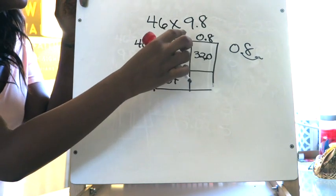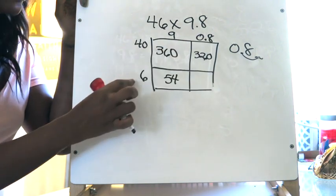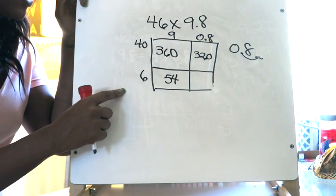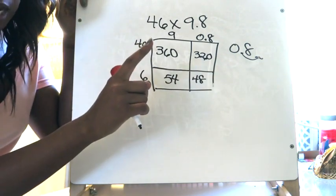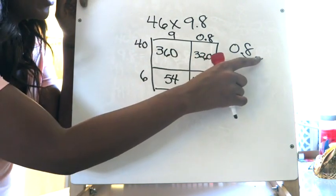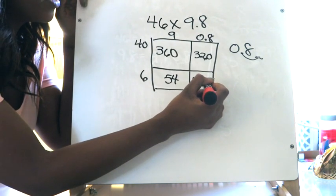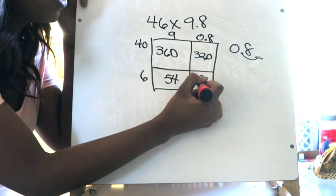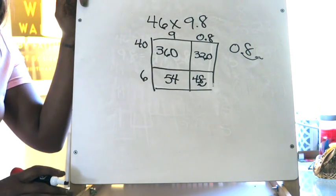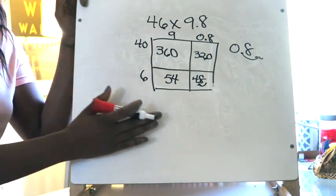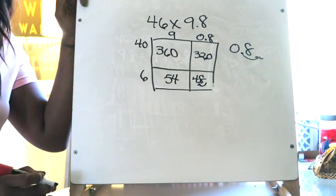Now I'm going to multiply 8 tenths times 6. I'll think of 8 tenths as 8 to get the multiplication done: 8 times 6 is 48. Then I immediately remind myself I moved the decimal one place to the right, so I move it one place back to the left in the product. That tells me 6 times 8 tenths is 4.8. Now all the boxes in the diagram are filled — these all represent partial products.